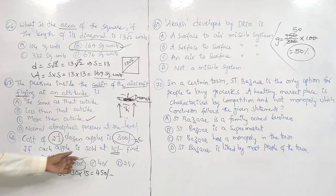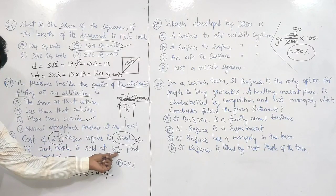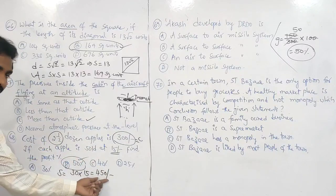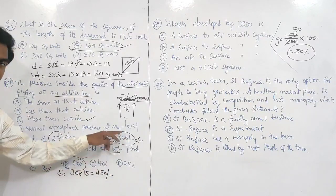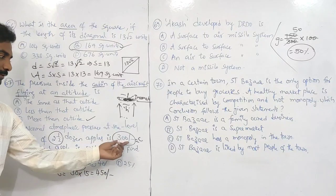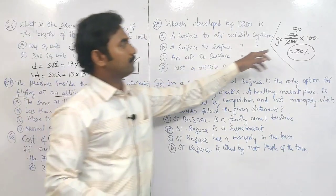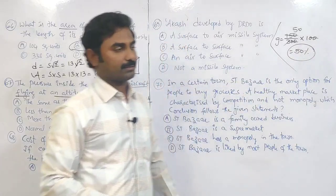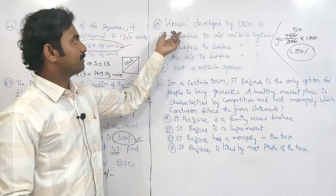Selling price of two and a half dozen: 15 × 30 = 450. Cost price is 300. Profit is 150 rupees. Profit percentage = profit / cost price × 100 = 50%.